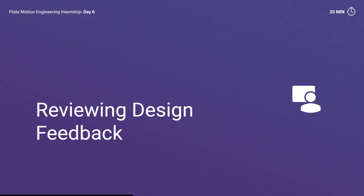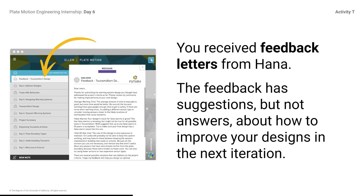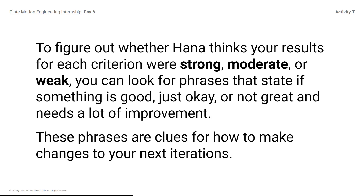Reviewing Design Feedback. You received feedback letters from Hanna. The feedback has suggestions, but not answers, about how to improve your designs in the next iteration. The feedback doesn't provide answers because there are many possible solutions to this problem. To figure out whether Hanna thinks your results for each criterion were strong, moderate, or weak, you can look for phrases that state if something is good, just okay, or not great and needs a lot of improvement. These phrases are clues for how to make changes to your next iterations.